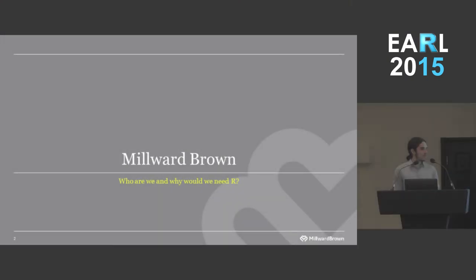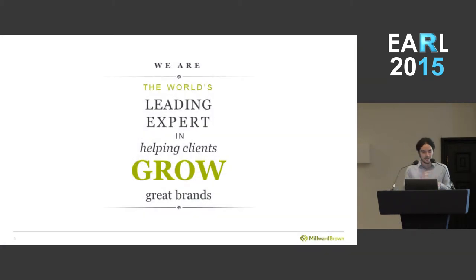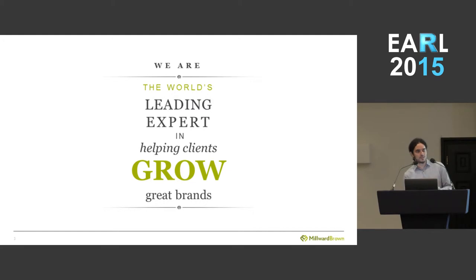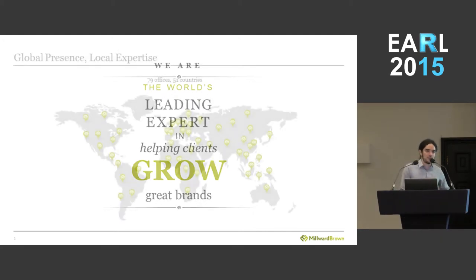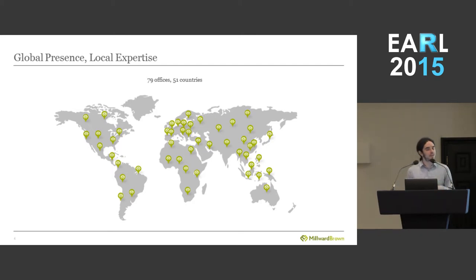So very quickly, Millward Brown — who we are. We are one of the biggest market research companies in the world. We specialize in brands. If you've ever had a little dive into market research, you'll find that there's lots of flavors to it. Some people will specialize in things like price elasticity or product placement, and we specialize on brands. We are all about trying to help clients grow their brands. We are global. We have offices everywhere, which means that we get data from everywhere, and that in itself is a nightmare that we have to deal with every day.